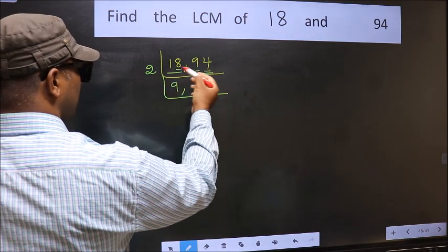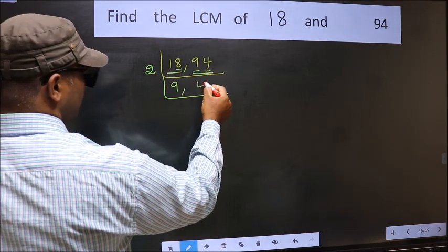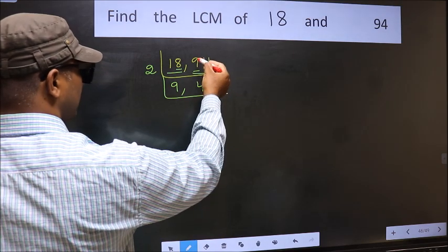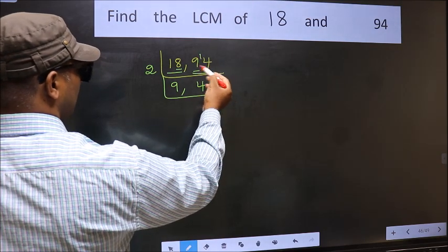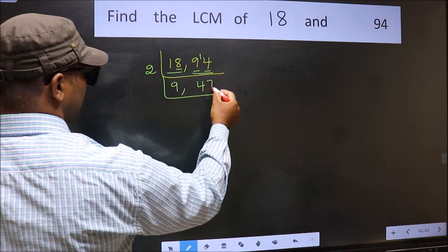First number 9, a number close to 9 in 2 table is 2 fours, 8. 9 minus 8, 1, 1 carried forward 14. When do we get 14 in 2 table? 2 sevens, 14.